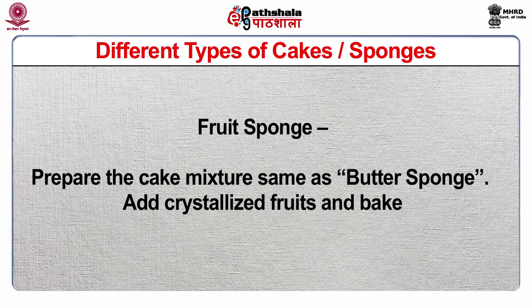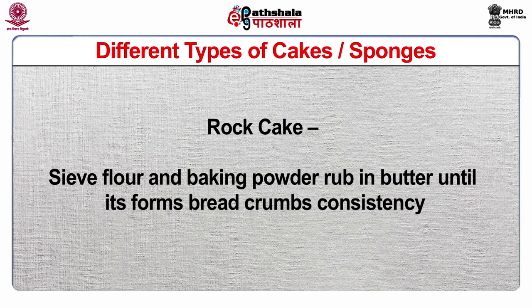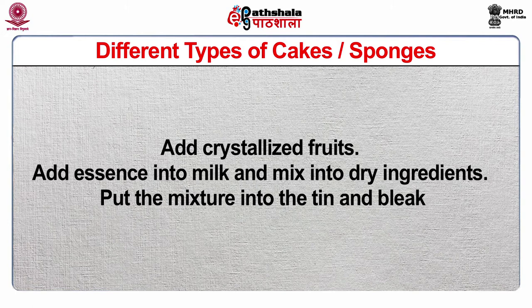Fruit sponge: prepare the cake mixture same as butter sponge, add crystallized fruits and bake. Rock cake: sieve flour and baking powder, rub in butter until it forms breadcrumbs consistency, add crystallized fruits, add essence into milk and mix into dry ingredients. Put the mixture into the tin and bake.